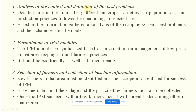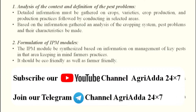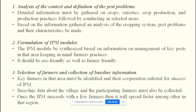The first step is analysis of the context and definition of the pest problem. In a particular area, in a particular agro-climatic zone, you need to know what crops are being grown, which varieties — hybrid or local — and what production and protection practices are being followed. Based on the gathered information, analysis of the cropping system and key pest problems and their characteristics has to be made.